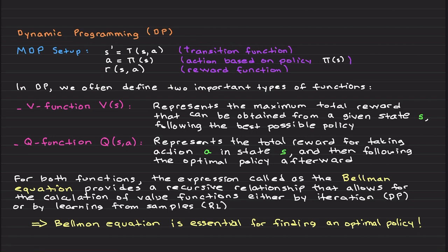In dynamic programming we often define two important types of functions, so-called V function and Q function. V stands for value, and Q sometimes refers to quality function. I'm just going to call it V and Q functions.